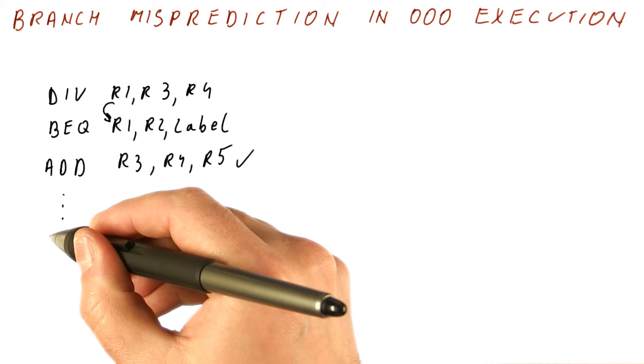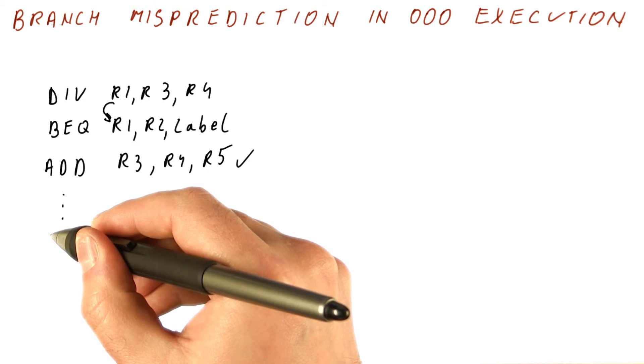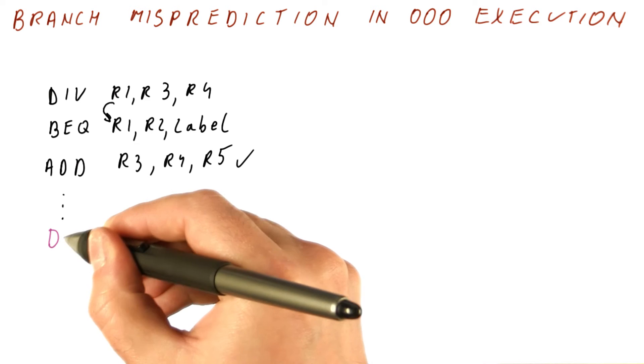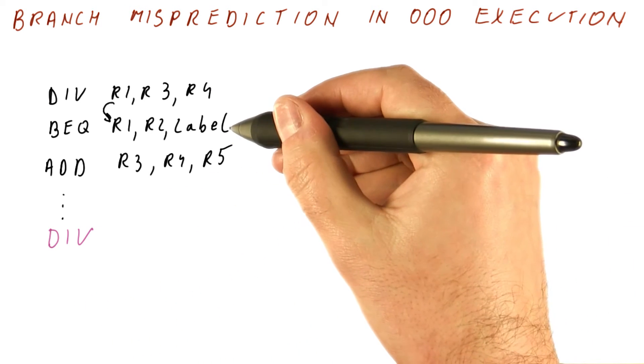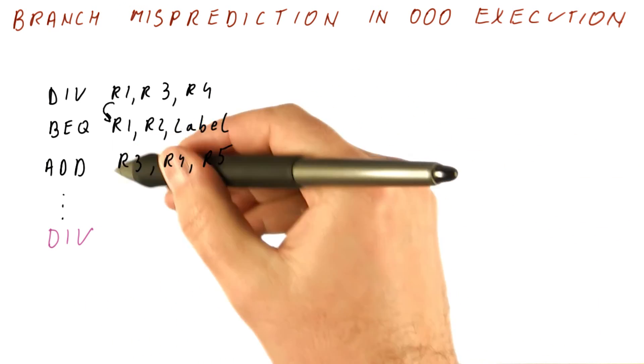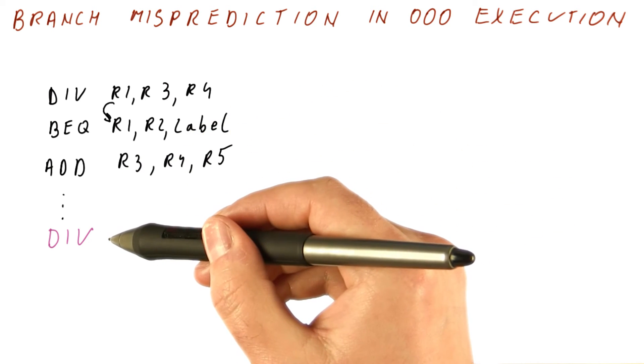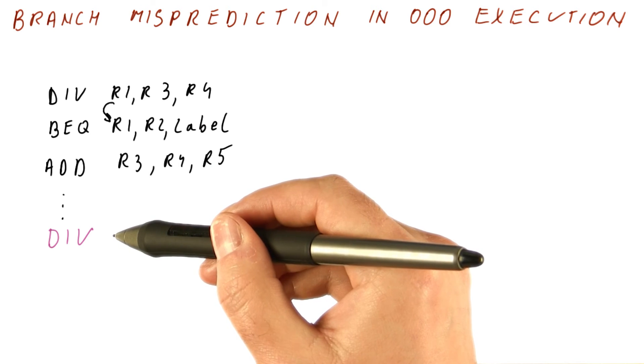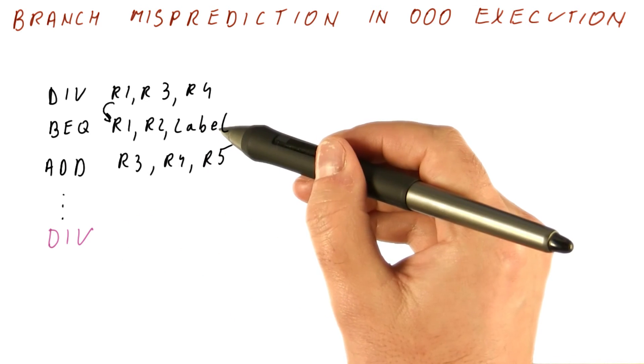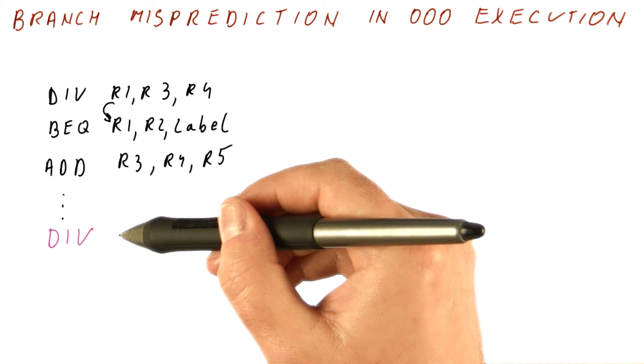A final problem occurs because of so-called phantom exceptions. So what we can have is, let's say that there is a divide here. Let's say that we have mispredicted this branch. The problem is, if there is a divide here and it generates an exception, the exception will be triggered even though this instruction was never supposed to be executed.